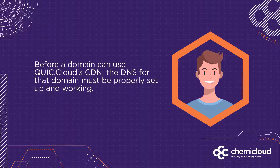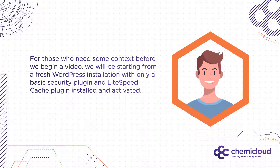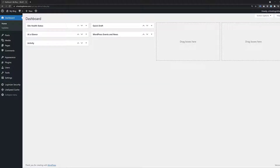Before a domain can use QuickCloud CDN, the DNS for that domain must be properly set up and working. We will be starting from a fresh WordPress installation with only a basic security plugin and Lightspeed Cache plugin installed and activated. First, you'll need to open your WP Admin. Once that's open, navigate to the Lightspeed Cache option in the menu on the left, and when the submenu appears, click General.